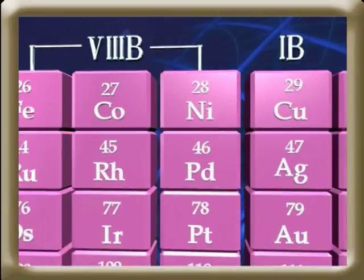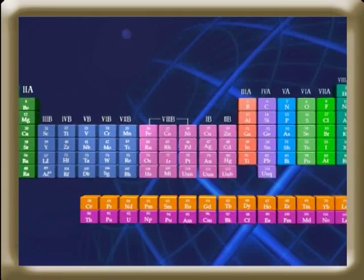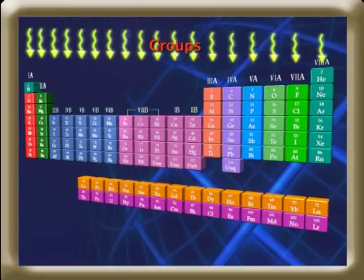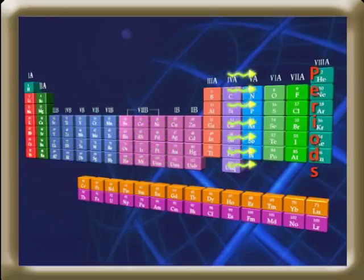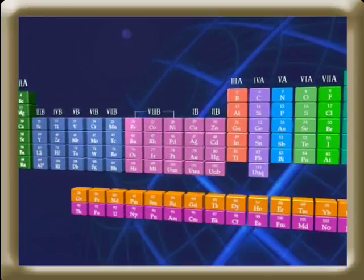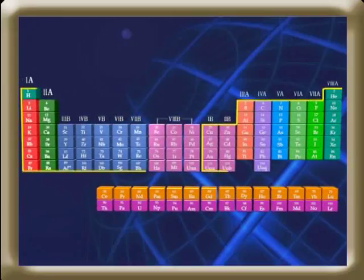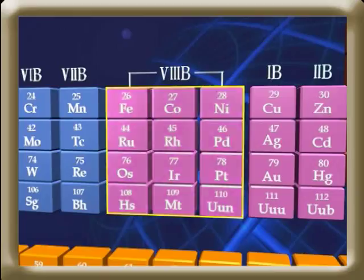There are a total of 118 elements in the periodic table. This table is divided into vertical columns called groups and horizontal rows called periods. There are 18 vertical columns or groups. Out of these 18 columns, 15 columns correspond to 15 groups, and the remaining three columns are present in the middle belonging to one group.